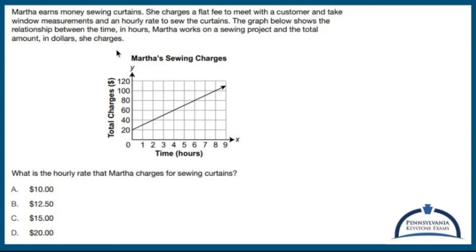So basically, Martha's going to charge somebody no matter what. And then after that, she's going to charge, like, 10 bucks an hour or whatever it's supposed to be.